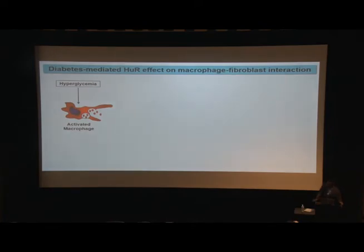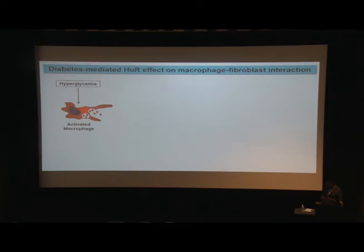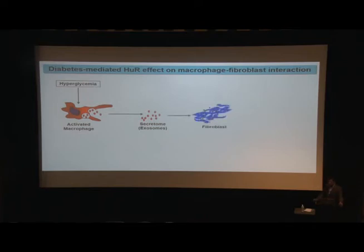We are interested in how diabetes, or specifically hyperglycemia, alters HUR expression and function. We are also interested in whether this protein, which plays a major role in microRNA biogenesis and mRNA stability, could be transferred into exosomes and alter the function of target cells — in this case fibroblasts — and what its implication is on a disease process such as angiotensin-induced cardiac fibrosis.